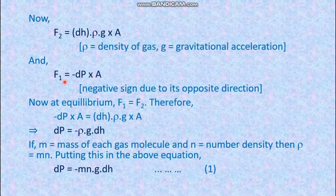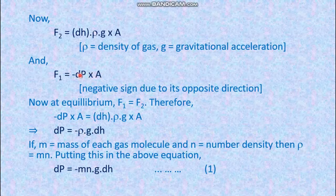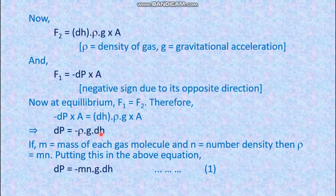F1 is equal to minus dP into A. The negative sign is due to its opposite direction. At equilibrium F1 equals F2, giving us dP equals minus ρg·dH.